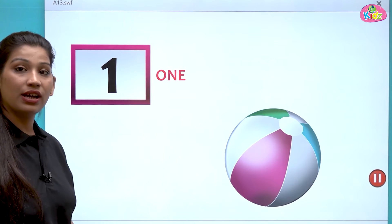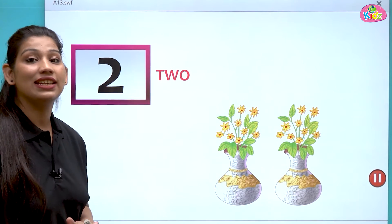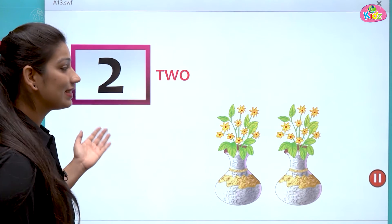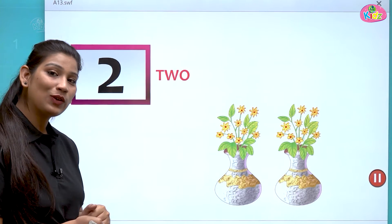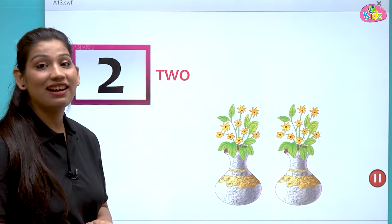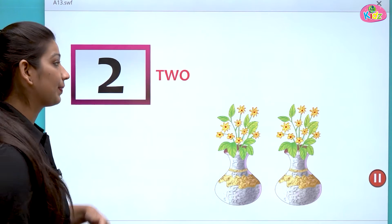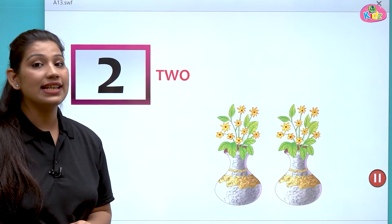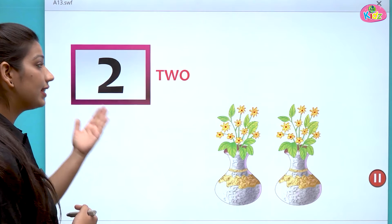The next number is number two. Here you can see flower vases. Count with me: one, two. Yes, there are two flower vases. The spelling of two is T-W-O. These are two flower vases.